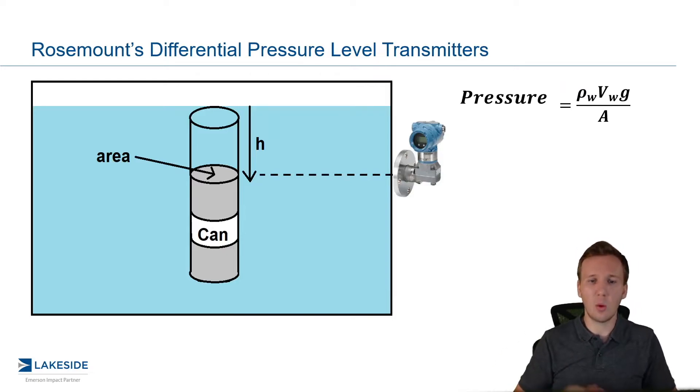And what you'll notice here is, well, wait a second, the volume of the fluid above this can is just equal to the cross-sectional area times the height. And what you'll notice is we can cancel out those area terms. And we're simply left with a very simple equation, the density of the water times the height of the water above the can times the gravitational constant.